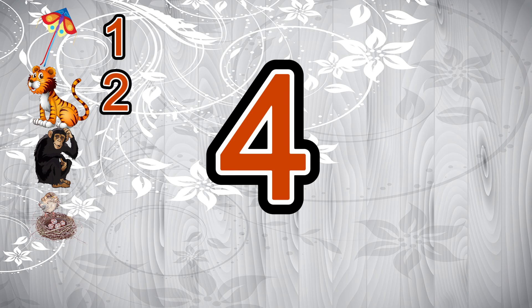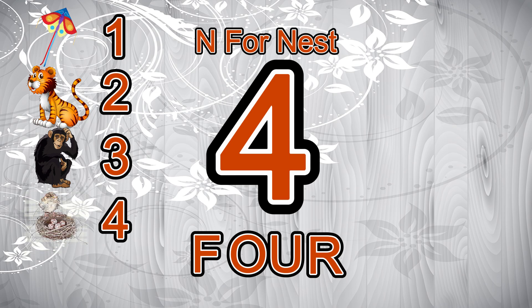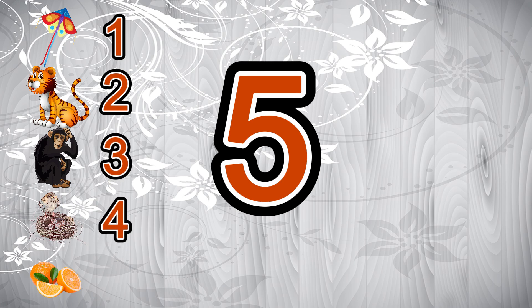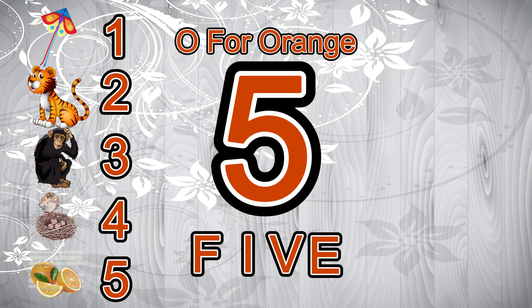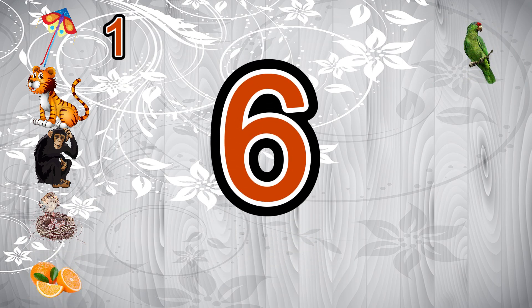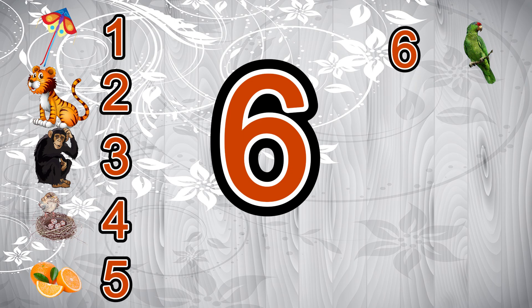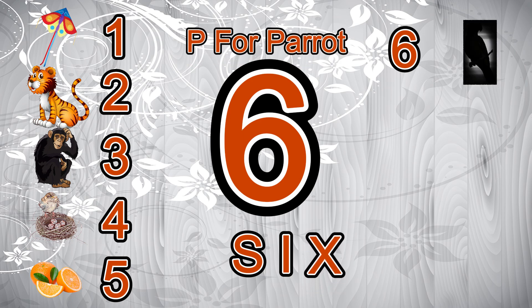4 - 1, 2, 3, 4 - F, O, U, R - 4. N for nest. 5 - 1, 2, 3, 4, 5 - F, I, V, E - 5. O for orange. 6 - 1, 2, 3, 4, 5, 6 - S, I, X - 6. P for parrot.